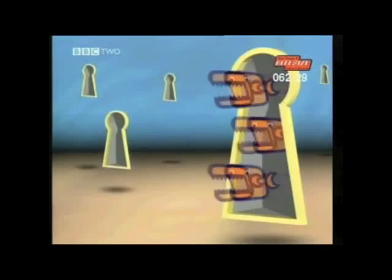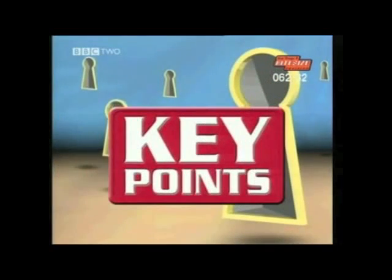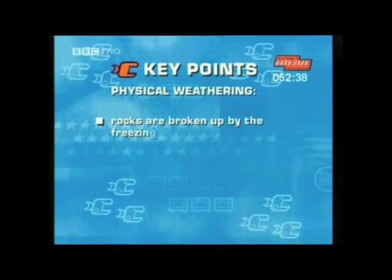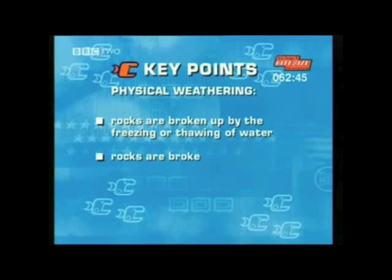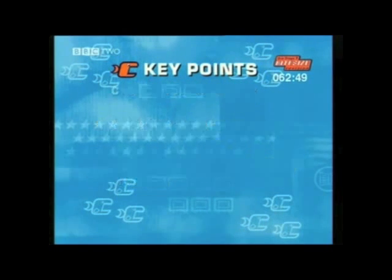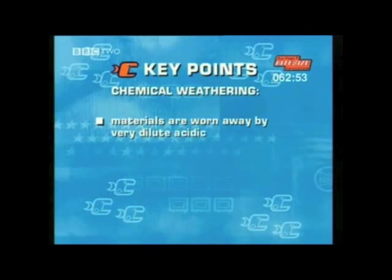Here are the key points you need to know about physical and chemical weathering. Physical weathering is the process where rocks on the surface are broken up — either by alternate freezing and thawing of water in the cracks of rocks, or by the continual expansion and contraction of rocks from the effects of the sun. Chemical weathering is the process where materials are worn away by naturally occurring acid dissolved in rainwater.